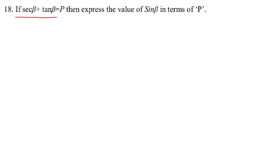If sec beta plus tan beta equal to p, then express the value of sin beta in terms of p. We have a relation: sec beta plus tan beta equal to p, and we need to express sin beta as some function of p.